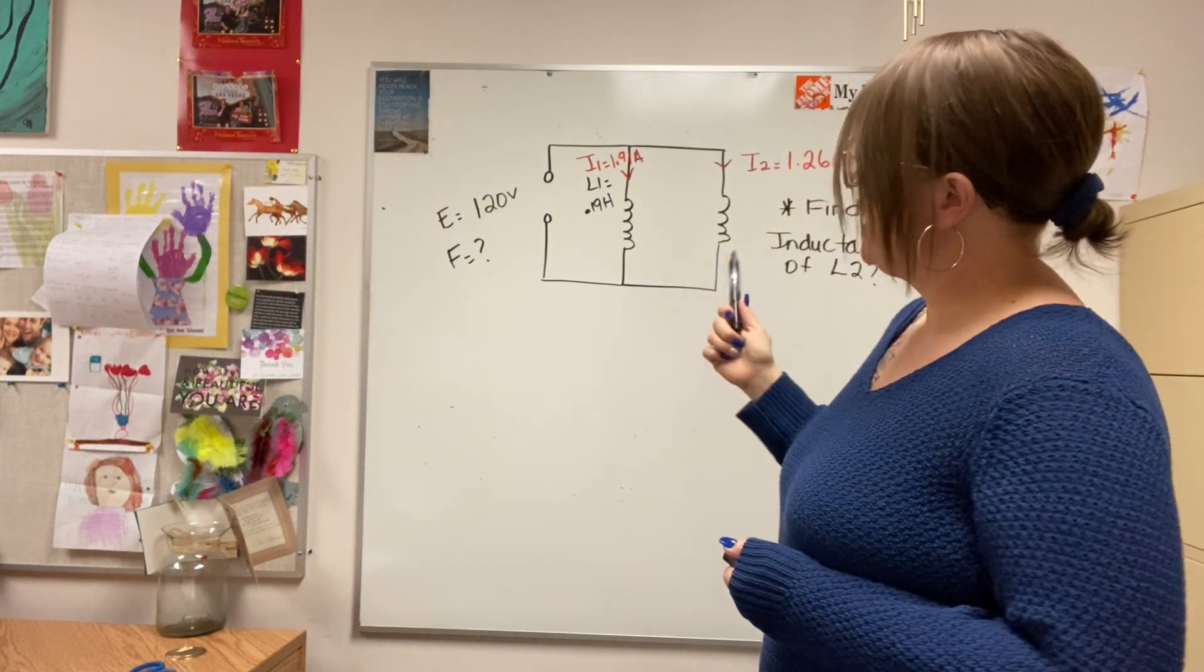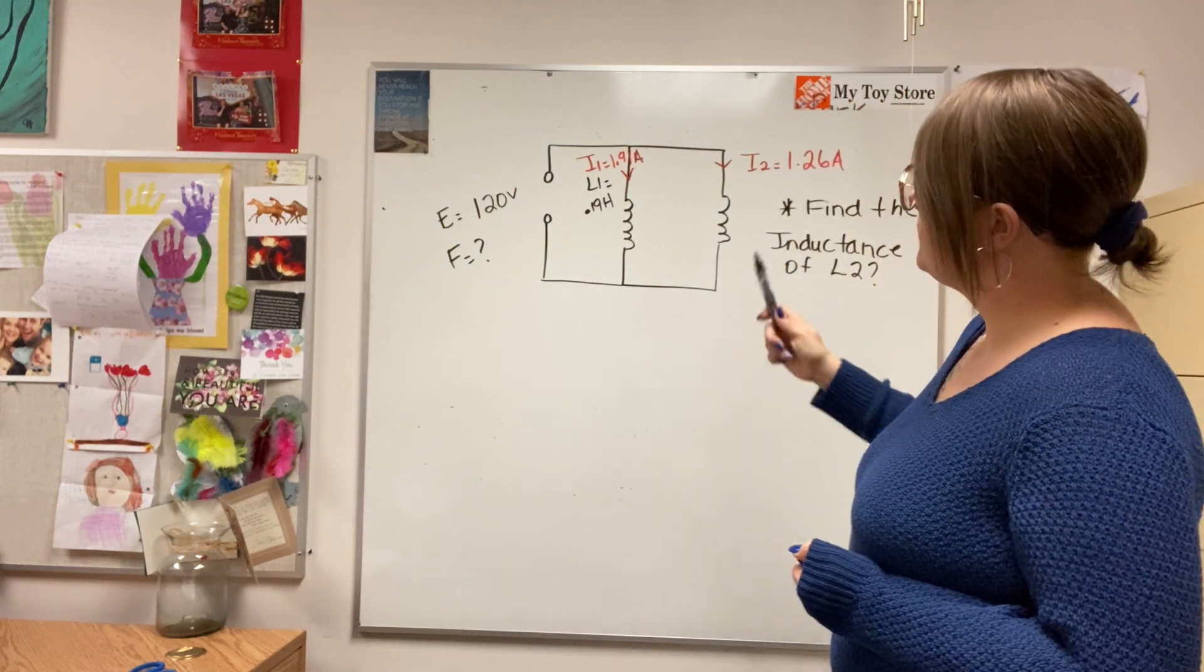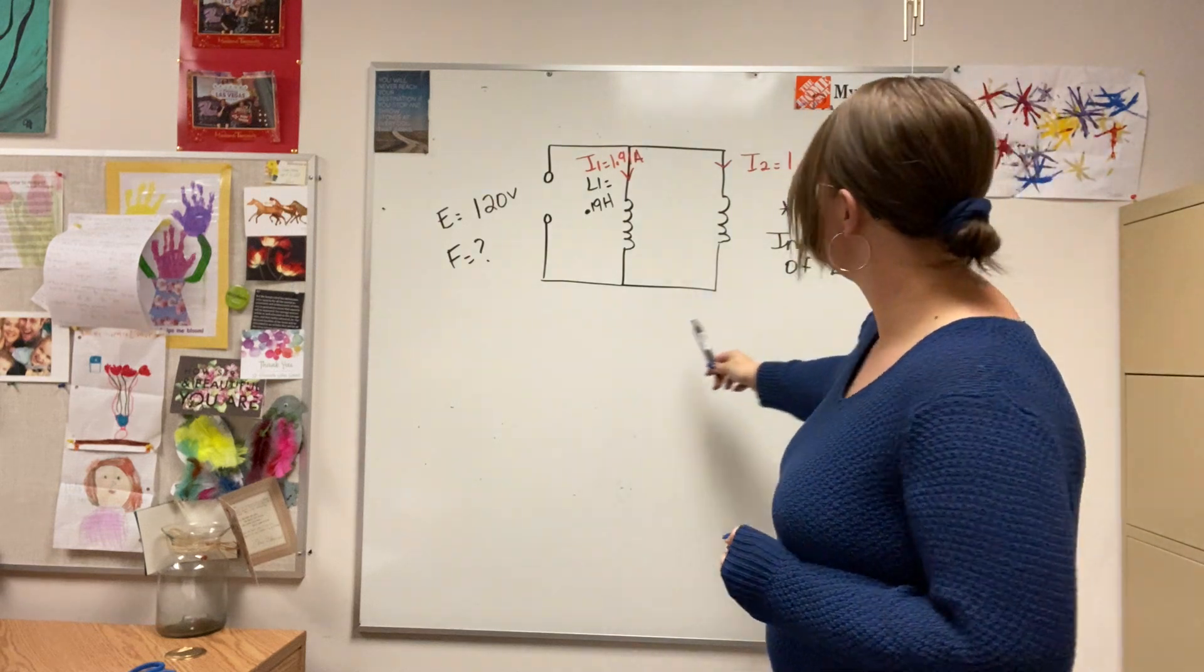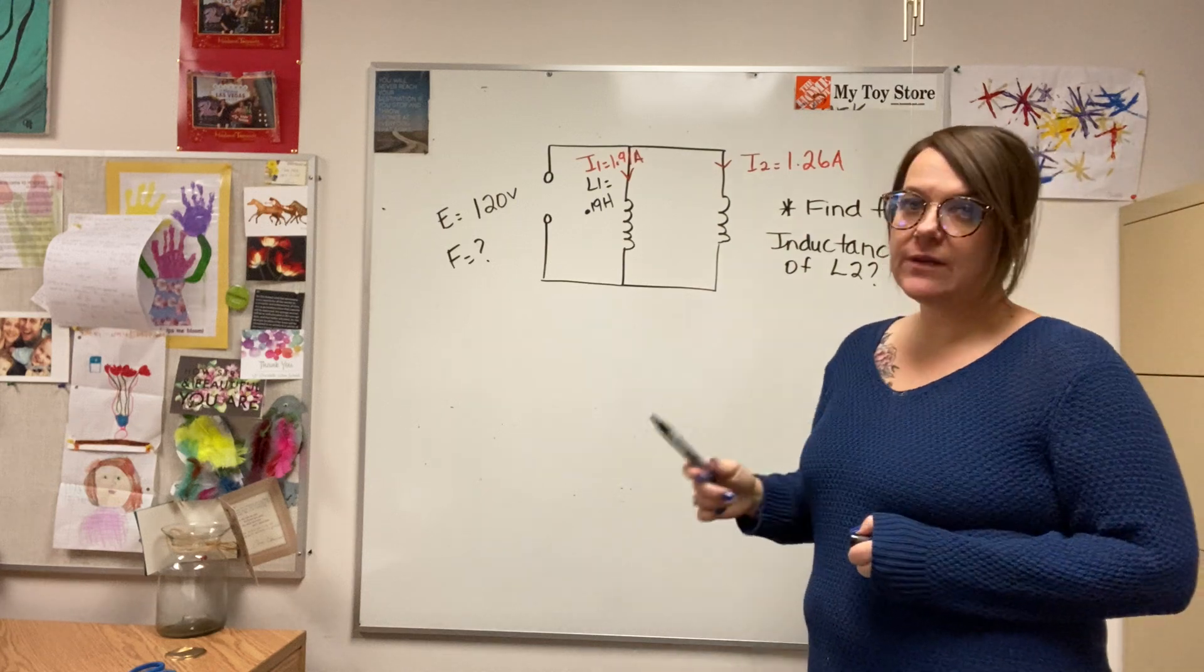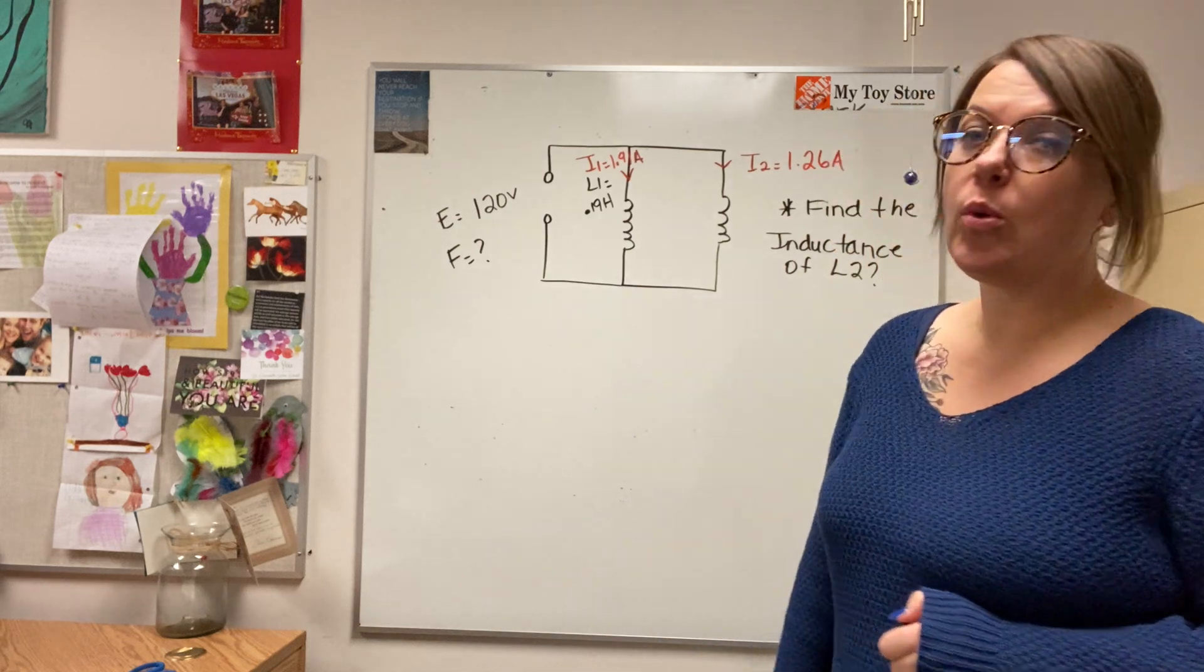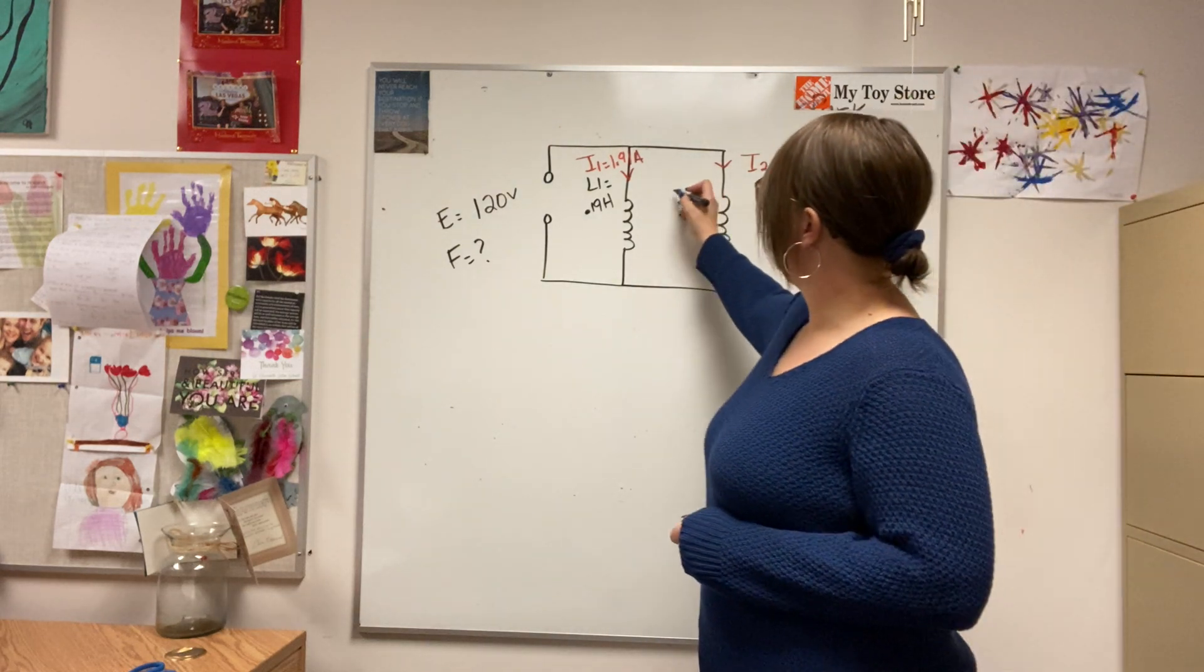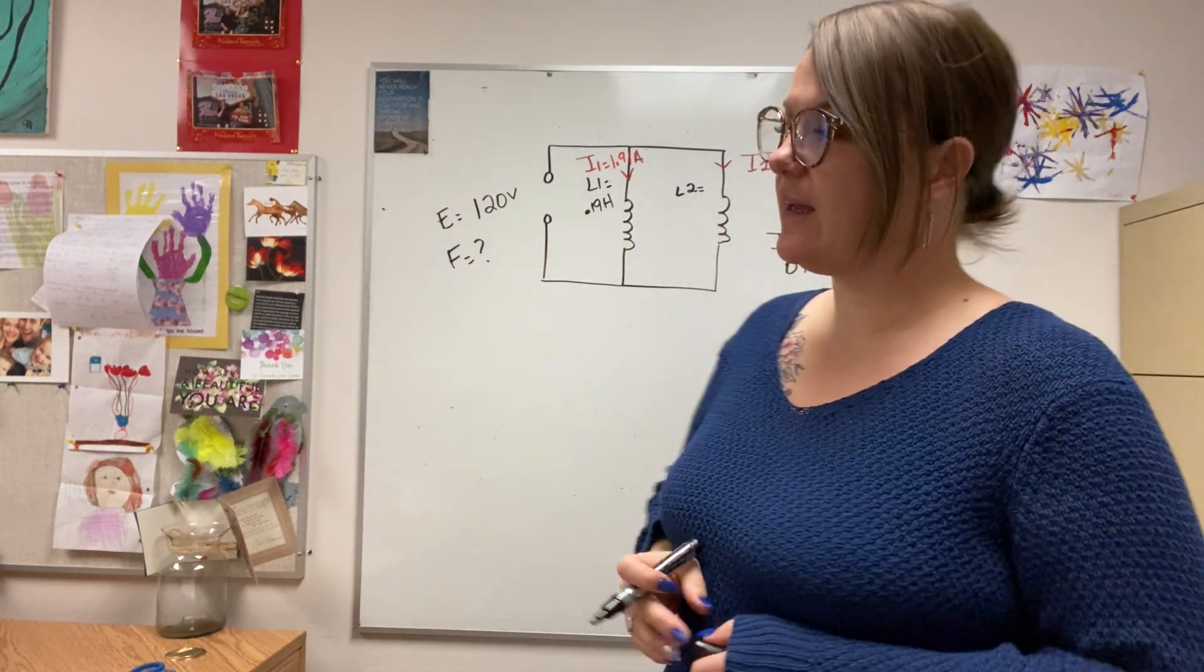It tells me that I have a source voltage of 120 volts with an unknown frequency. It gives me the current through the first inductor of 1.91 amps, current through the second inductor of 1.26 amps, and it gives me the inductance rating for my L1, 0.19 henrys. And the question wants me to find L2, so I'm looking for the inductance rating of the second inductor.